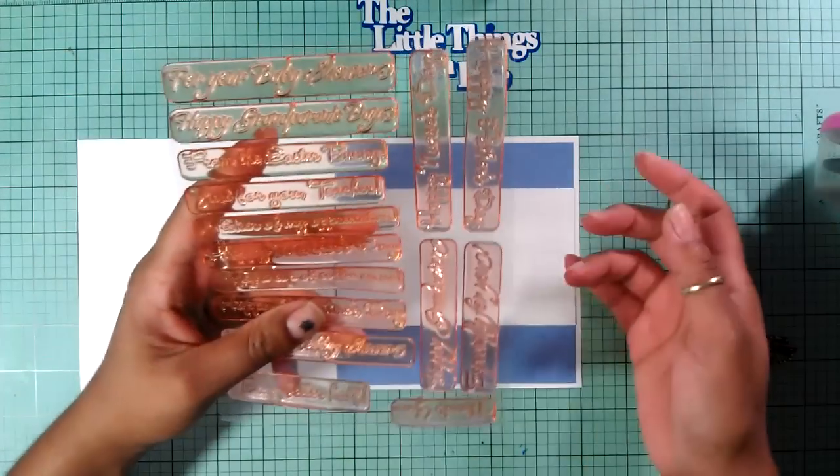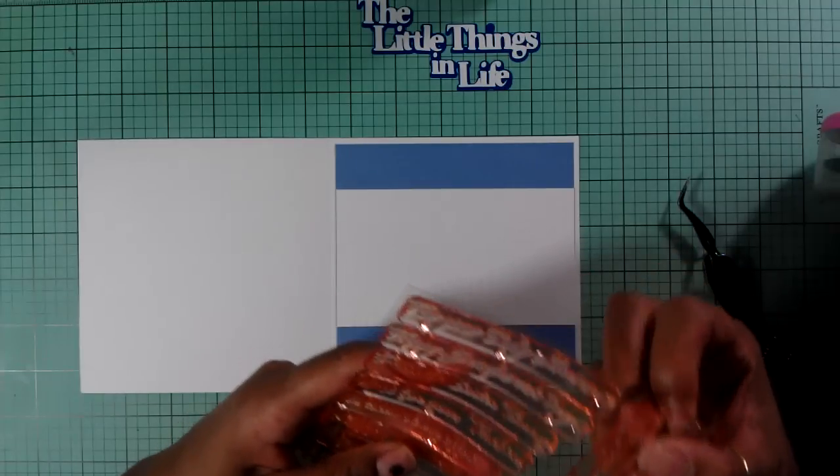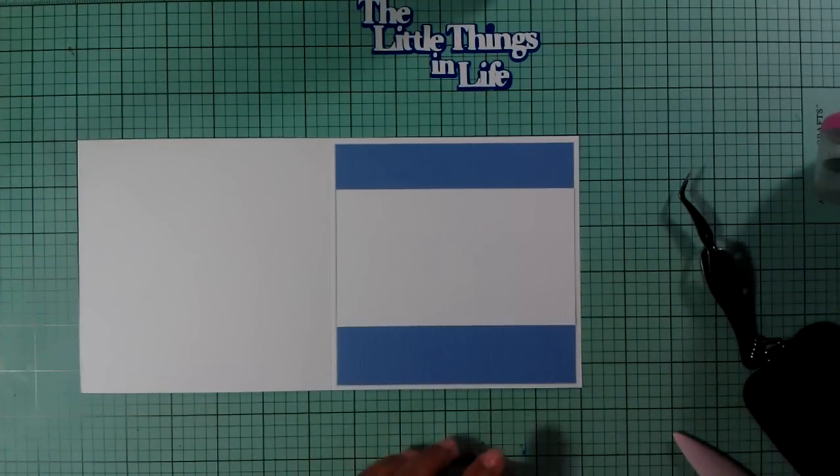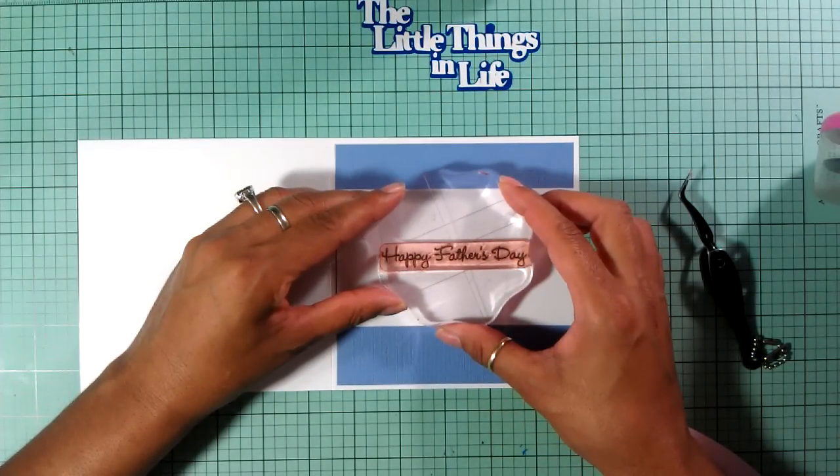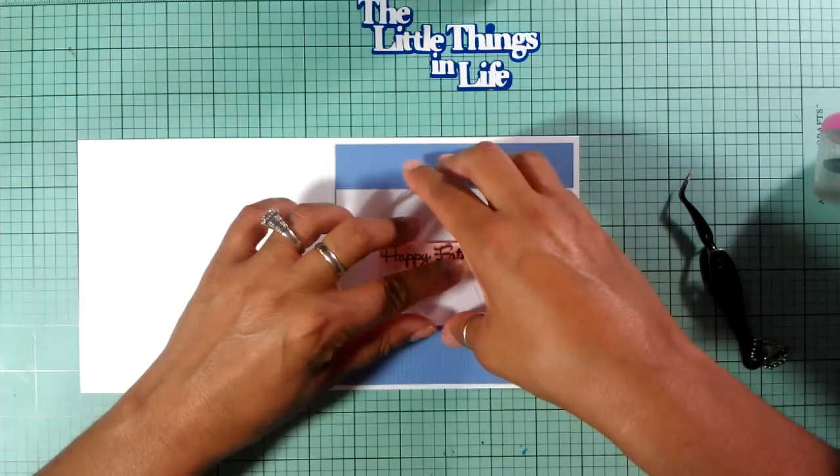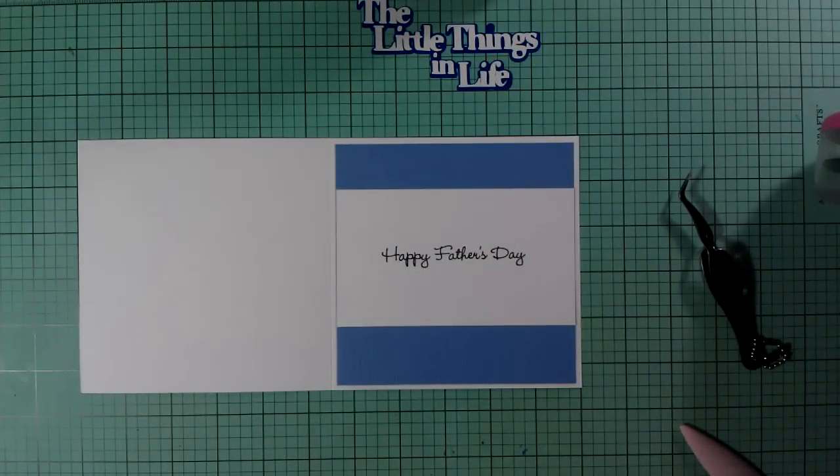For the inside, I'm going to use my gift card sentiments from My Creative Time with Emma. I'm going to use the Happy Daddy Day. I've got my Memento Tuxedo Black Ink. That's my husband in the kitchen cooking. He's making himself a really good, healthy salad.